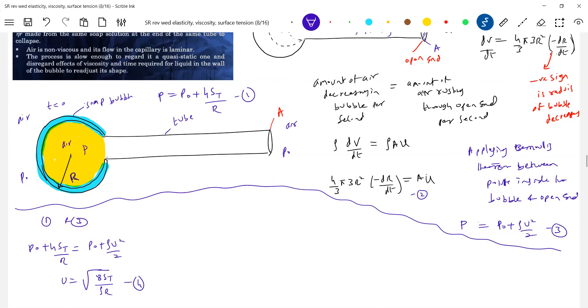From 1 and 3. So P0 plus 4 ST by R is equal to Rho U square by 2. So with this, I'm getting expression for speed of the air. So this will be U square equal to 8 ST by Rho R. Call this equation any number. Still our question is what? Time taken. How to bring that time? I think the dt is available here. You can see the equation 2. This is what? I'll put now 4 into, substitute.